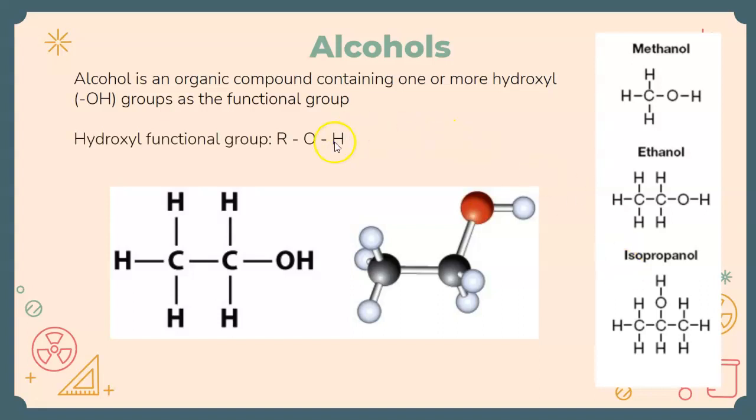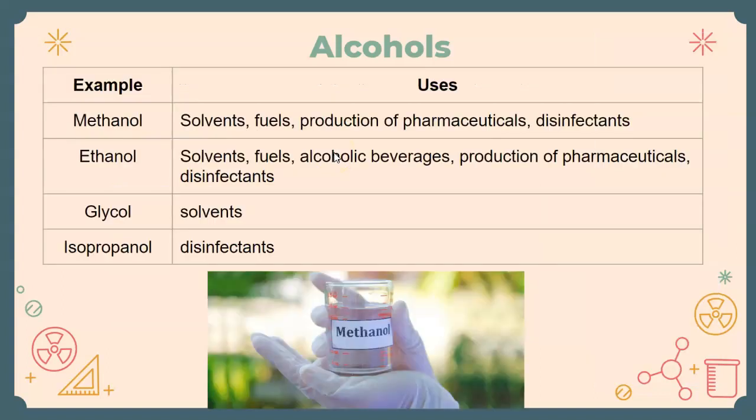So the hydroxyl group is R, which would represent a different type of molecule, an alkane with an OH connected to it. So some examples of alcohols that you may have come across are like methanol, ethanol, glycol, or isopropanol.